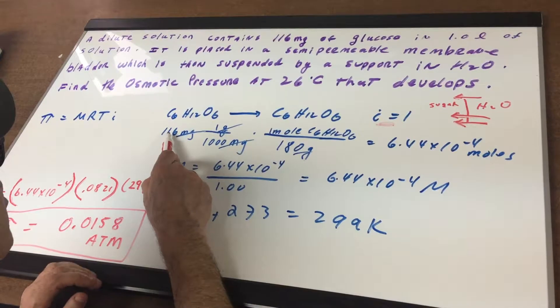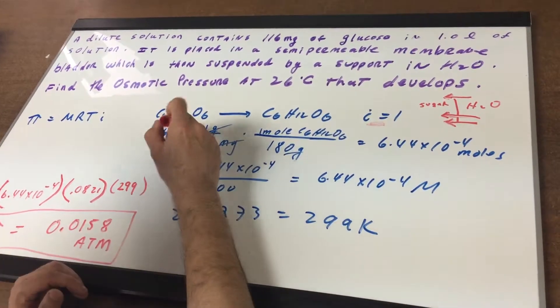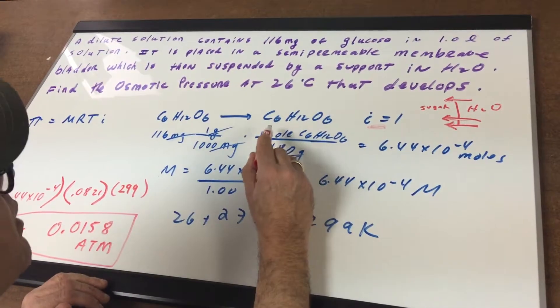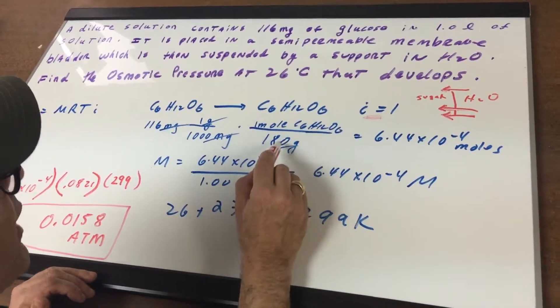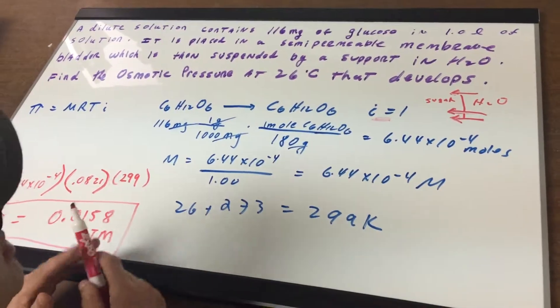I'm going to then take 116 milligrams. One gram is a thousand milligrams, which crosses out milligrams, and one mole of sugar, which you look up, the weight is 180. Grams cancel out so you're left in moles.